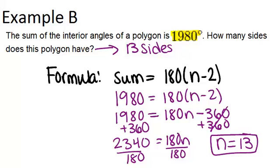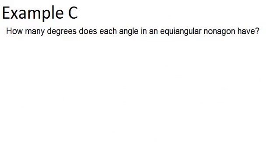Alright, let's look at example C. How many degrees does each angle in an equiangular nonagon have? So equiangular means that all the nine angles in the nonagon are the same measure.